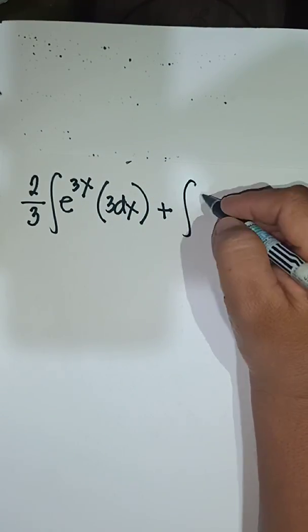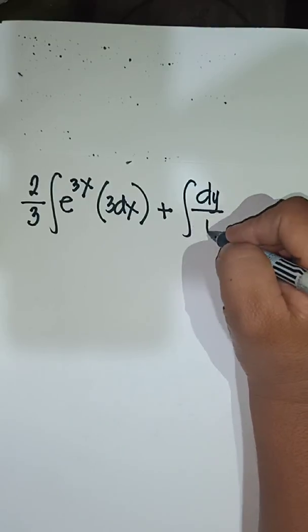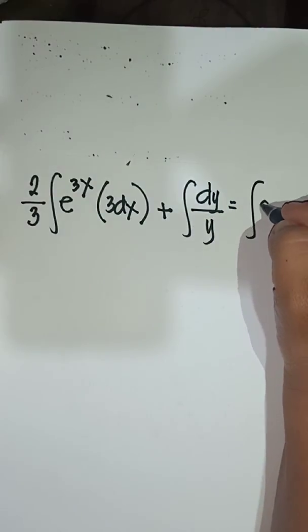You will have plus the integral of dy over y equal to the integral of 0.